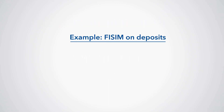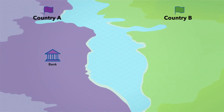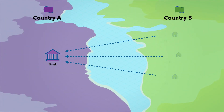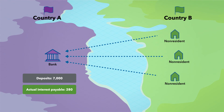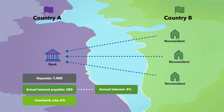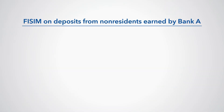Let's now look at an example of FISIM on deposits. Bank A also has deposits from non-resident households of 7,000. The actual interest payable on these deposits is 280, implying an annual rate of interest of 4%. The interbank rate between resident and non-resident financial corporations is 6%.